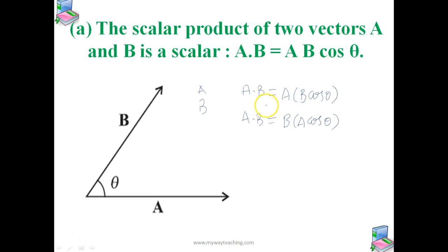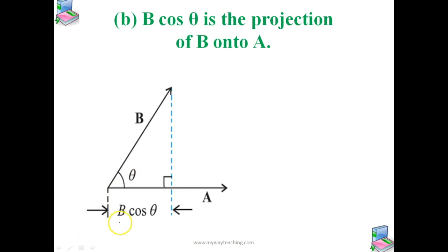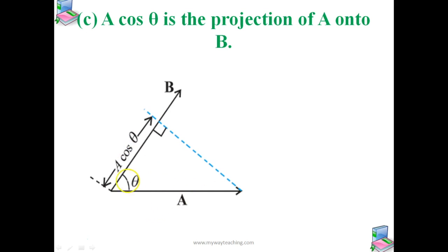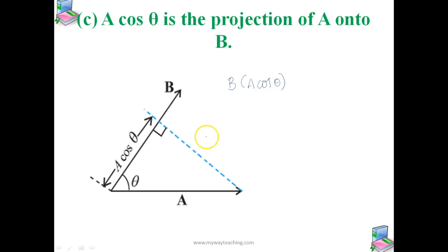b cosθ is the projection of b onto a, as you can see in the figure. And a cosθ is the projection of a on vector b. So a·b is the product of the magnitude of a and the component of b along a. If you consider a·b, then it is the product of magnitude of a and b cosθ — that is the component of b along a. Alternatively, it is the product of the magnitude of b and a cosθ, which is the component of a on vector b.